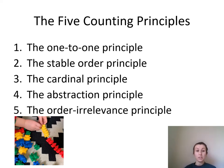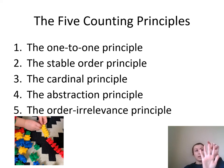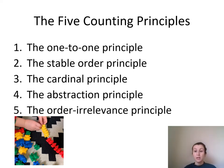The second counting principle is the stable order principle. This is where children learn that when they count, numbers need to be said in a certain order. When we're counting to five, we can't say five, three, two, one — because then we're not going to know the quantity of that amount. So we encourage children to count aloud to larger numbers, but without necessarily expecting them to be able to count that number of objects straight away. We support them with that counting.